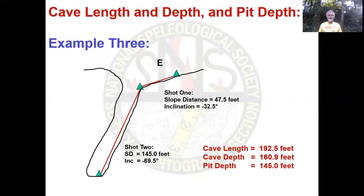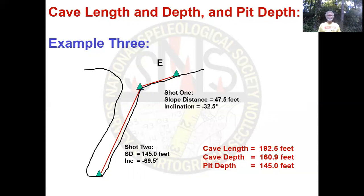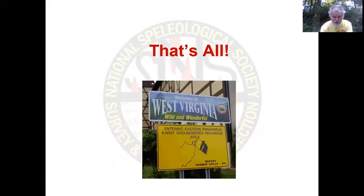Example three: one shot up in the sinkhole and then down the pit. The shot in the sinkhole slope was 47.5 feet, and the pit was again 145 feet deep. The cave length is the two shots combined — the slope distance of the two shots — which equals 192.5 feet. The cave depth, from station one to station two, the vertical distance between the two, is 160.9 feet. And the pit depth is still 145.0 feet. And that, folks, is it.